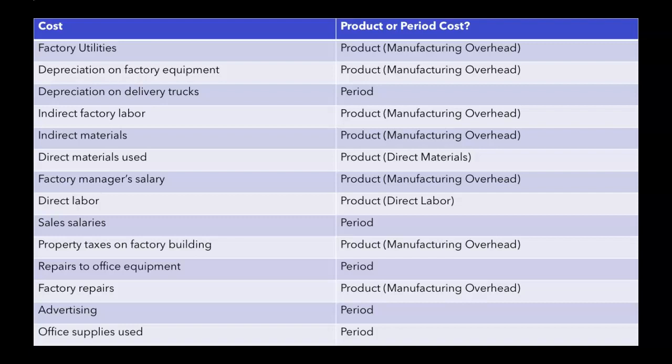We need those three, plus our work-in-process amounts. Period costs are costs that a company still cares about because they still have to pay for them, but they're not part of the manufacturing process, so they're not product costs.